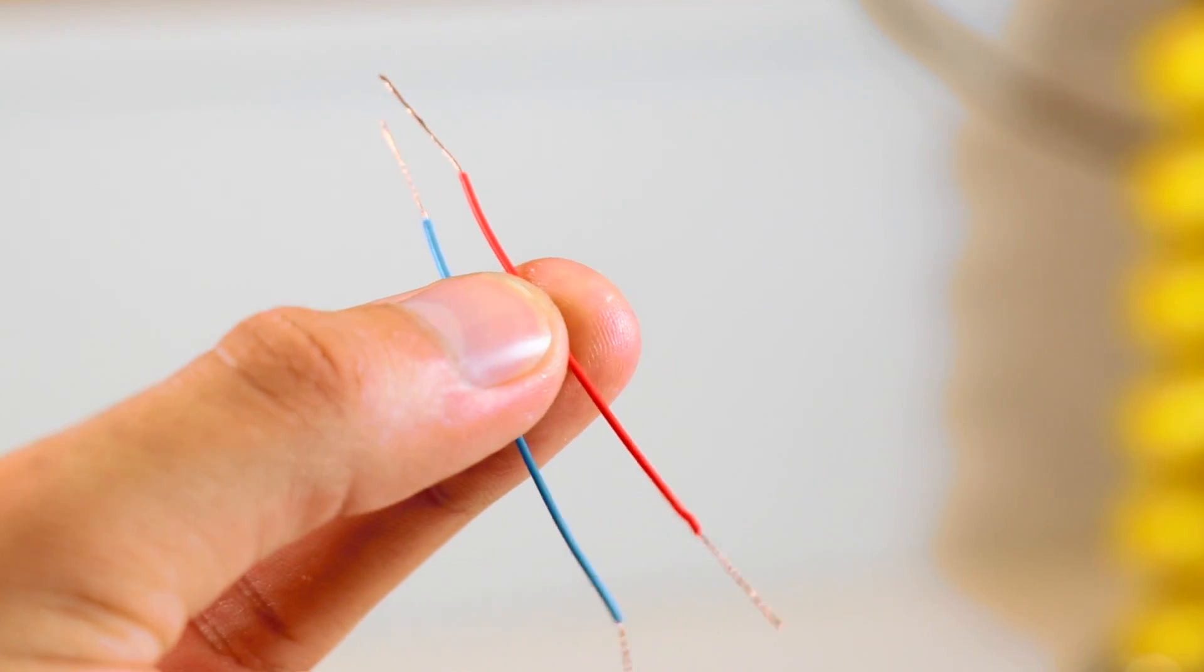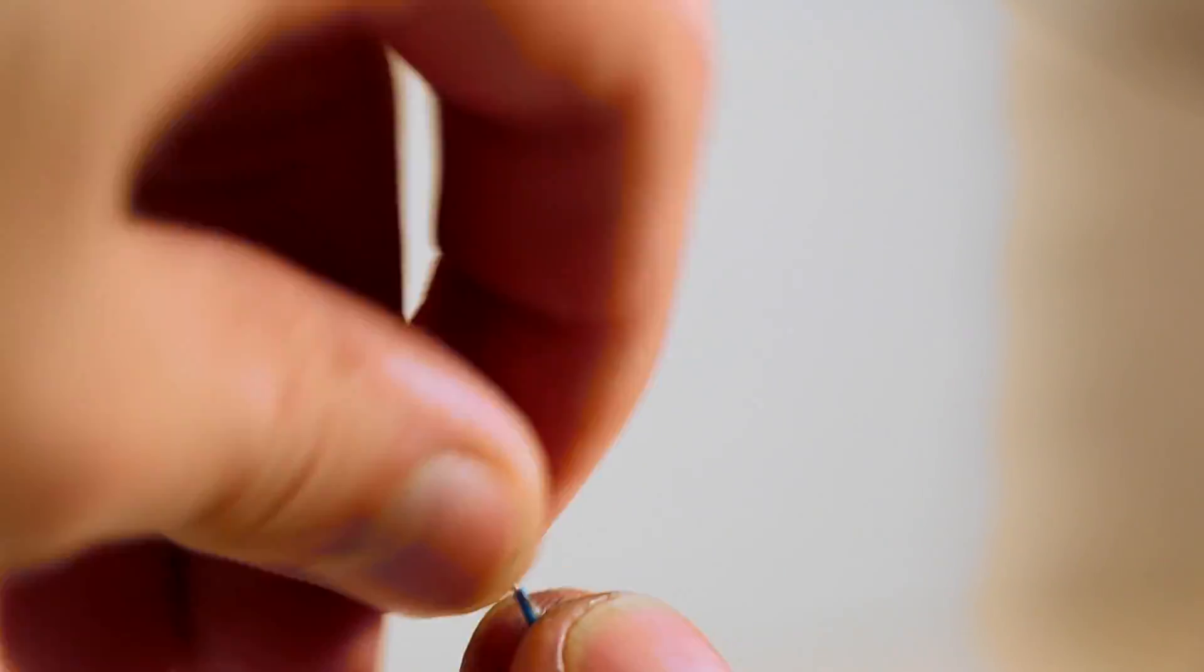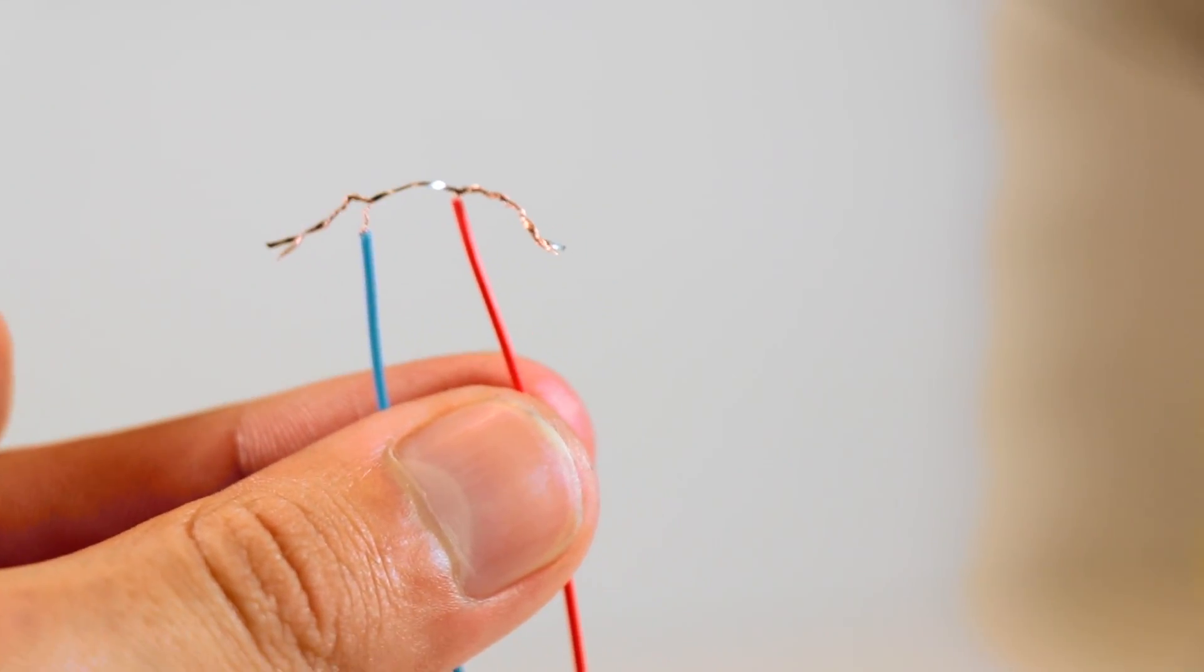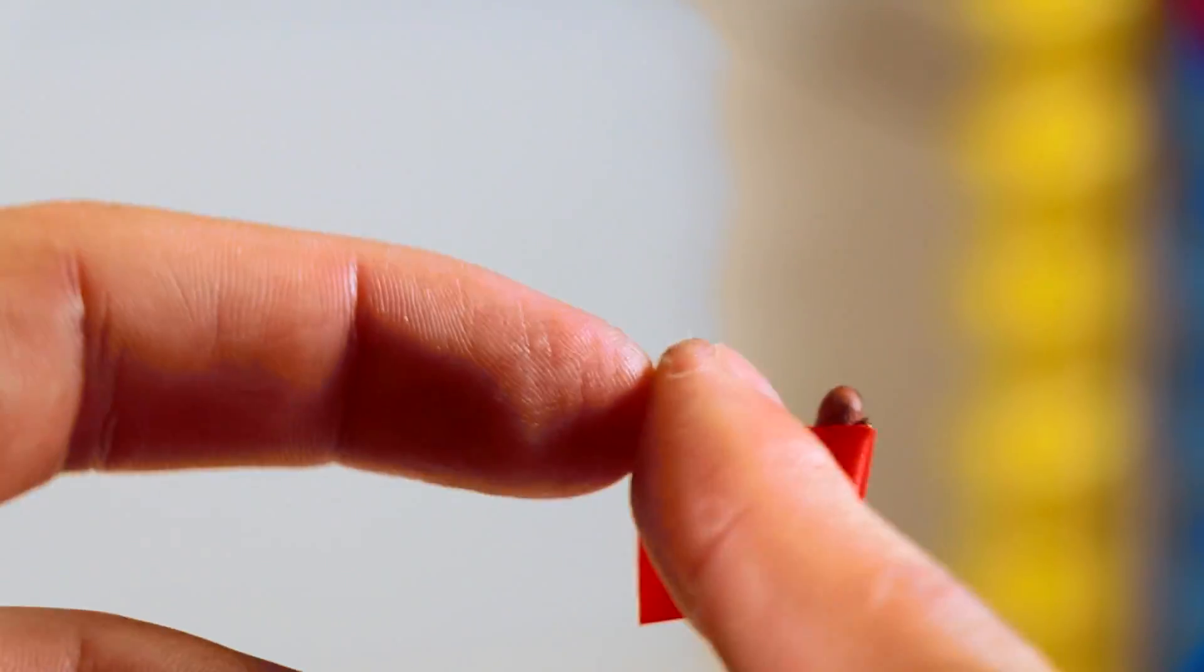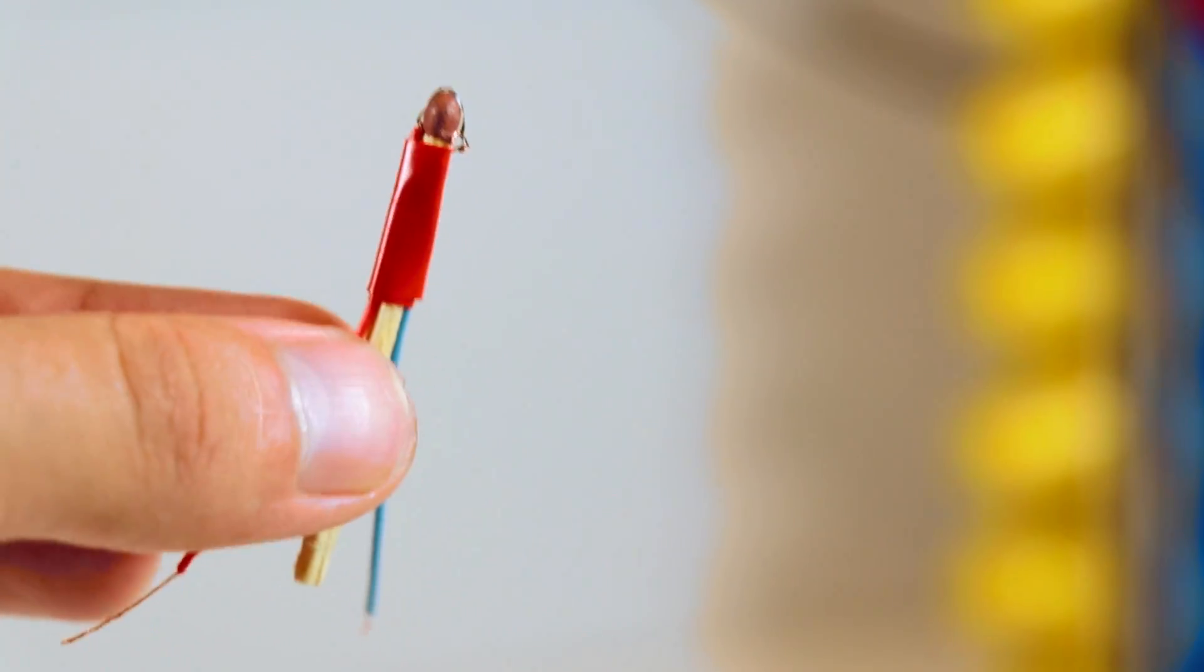Then take some small wires and connect them to the steel sponge like this. Now take a match and secure the wires over it like this. Use some tape to hold the entire thing together and that's your igniter all done.